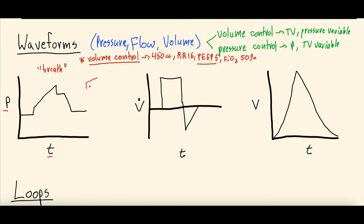The pressure waveform does not start at zero — it starts at the PEEP value, because the PEEP is the end-expiratory pressure always present in the circuit whether the patient is breathing in or out. So you have your PEEP baseline. Then the pressure starts to increase — this is inspiration. On the pressure waveform you might see a smooth transition upward, meaning the ventilator gave the breath. Or you might see a little dip — a slight decrease in pressure — which is suggestive that the patient took a breath, because the patient contracted their diaphragm and created a slight negative inspiratory pressure, and then the ventilator noticed this and gave the volume-controlled breath.